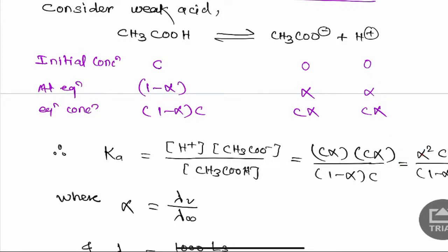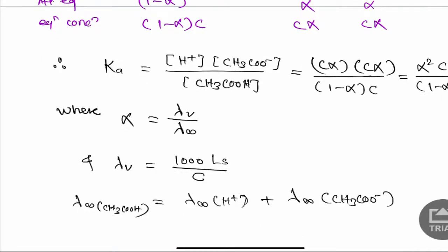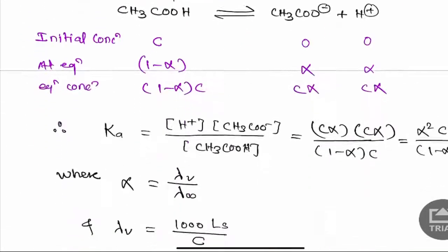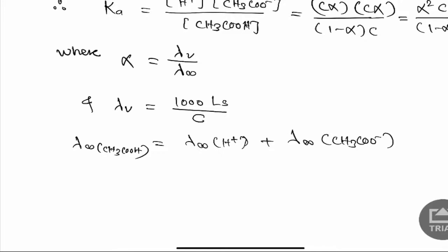Here alpha is the degree of dissociation or ionization, and α = λV / λ∞. The value of λ∞ is a standard value obtainable from laboratory manuals or Kohlrausch's law, and λV is determined experimentally as λV = 1000 × Ls / C. These are the fundamental steps to determine the degree of dissociation and the dissociation constant Ka of a weak acid by conductometric measurement.